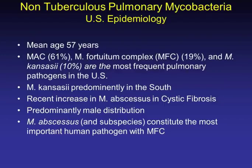For pulmonary mycobacteria specifically, we tend to see this as a disease of older individuals. Among pulmonary disease in the U.S., MAC by far outweighs all other NTM species, followed by the M. fortuitum complex — the rapid-grower mycobacteria, including fortuitum, chelonii, and abscessus. Kansasii is seen some here in Florida but is much less common than abscessus and MAC. Among the rapid growers, abscessus and its subspecies are the most significant human pathogen.